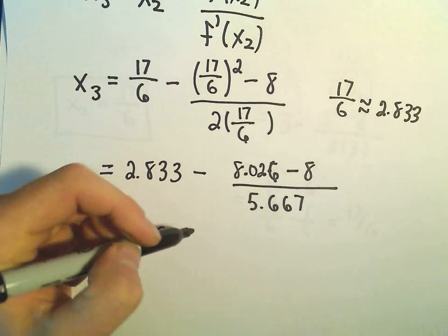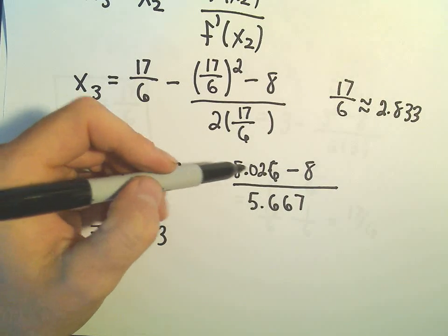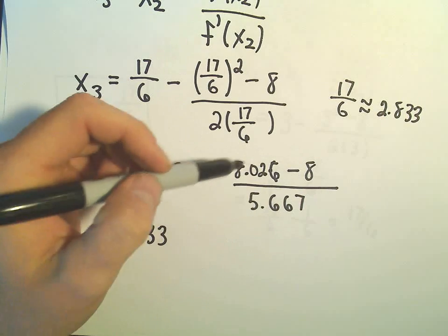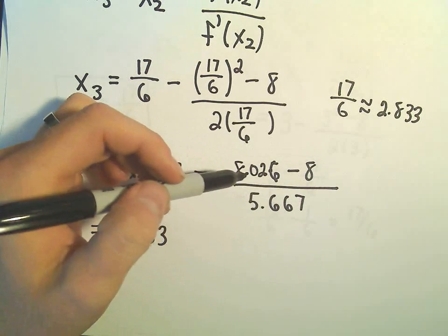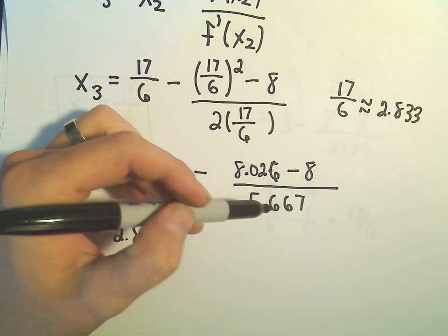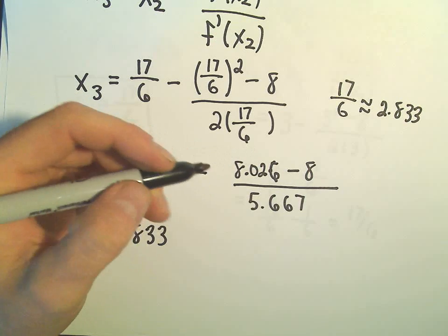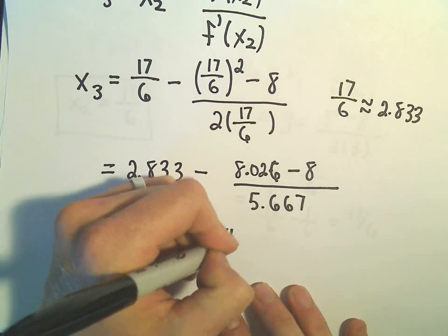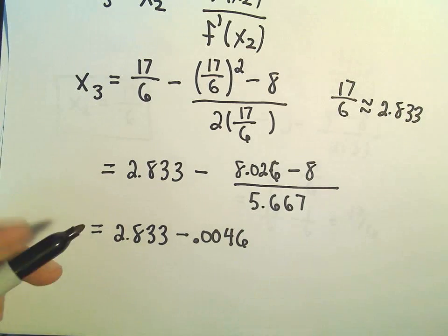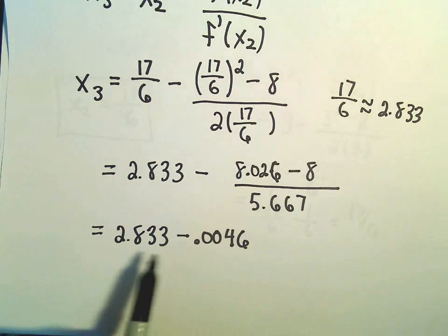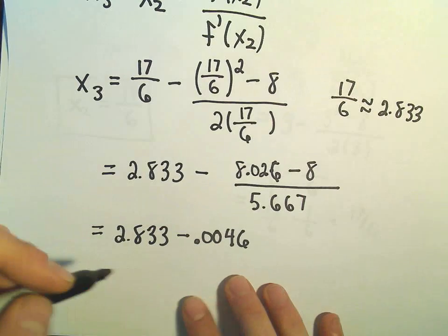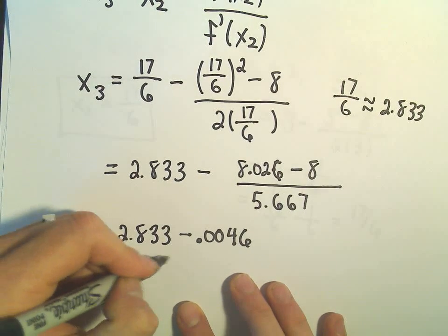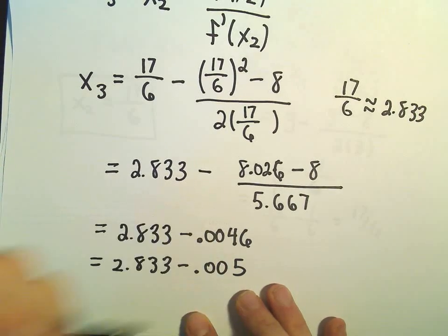So I'm going to keep simplifying this down. So 2.833. So let's see, if we do, so 8.026 minus 8 is just going to be 0.026 in our numerator. So 0.026, if we divide that by 5.667, we're going to get 0.0046 after rounding. So I probably should just keep 3 decimal places, I guess, since that's what I've been doing. So let me approximate this a little bit more,